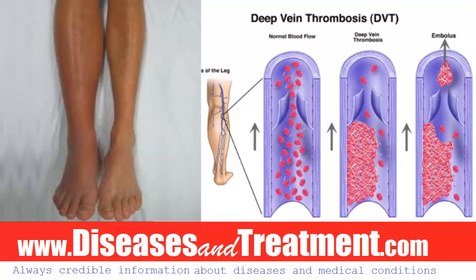The diagnosis of deep vein thrombosis can be suggested by blood tests and confirmed by ultrasound or other imaging tests like MRI or CT scan. Treatment typically involves blood-thinning medications known as anticoagulants, unless they are contraindicated.